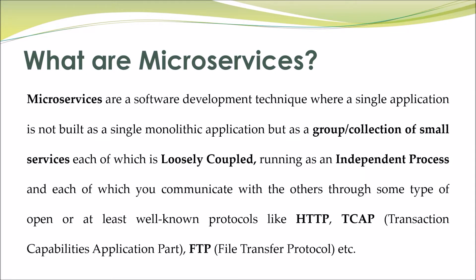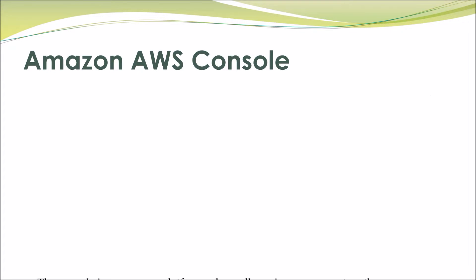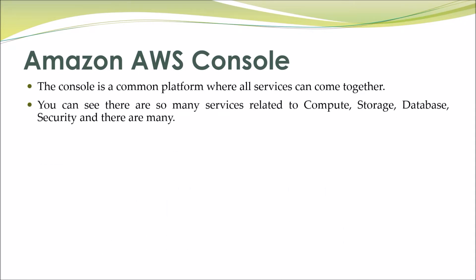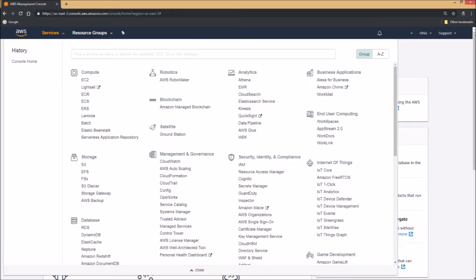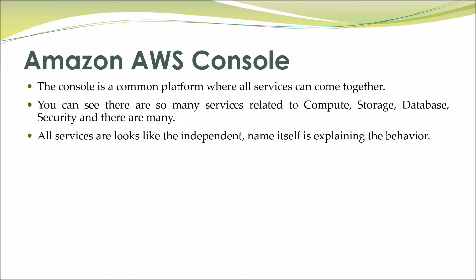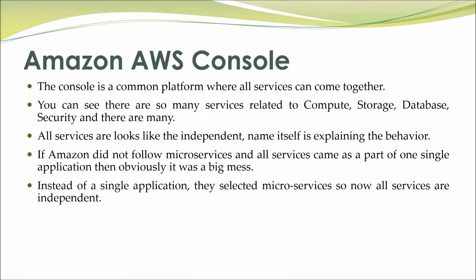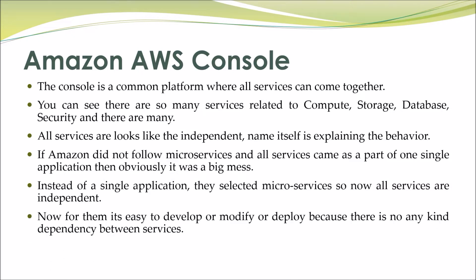Each service communicates with the others through some type of open or well-known protocols like HTTP, TCAP (Transaction Capabilities Application Part), FTP (File Transfer Protocol), etc. For example, the Amazon AWS console is a common platform where all services come together — compute, storage, database, security, and many more. All services look independent. If Amazon did not follow microservices and all services came as part of one single application, it would have been a big mess. Instead, they selected microservices, so all services are independent and easy to develop, modify, or deploy with no dependency between services.